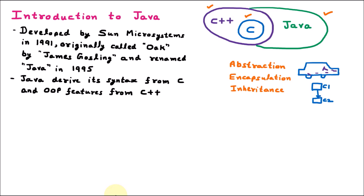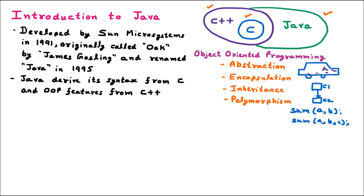The fourth feature is polymorphism. When we have one name in many forms, that is called polymorphism. Poly means many, morphs means form — one thing in many forms is called polymorphism. Let's say if I am using a function named sum, it makes the sum of two values, say a and b. Similarly, the same name I am using for making the sum of three values, say a, b, c. So the name sum is the same — this is called polymorphism. Whenever a language supports all four features — abstraction, encapsulation, inheritance, and polymorphism — that is called object-oriented programming. Because of all these four features, Java is an object-oriented programming language.